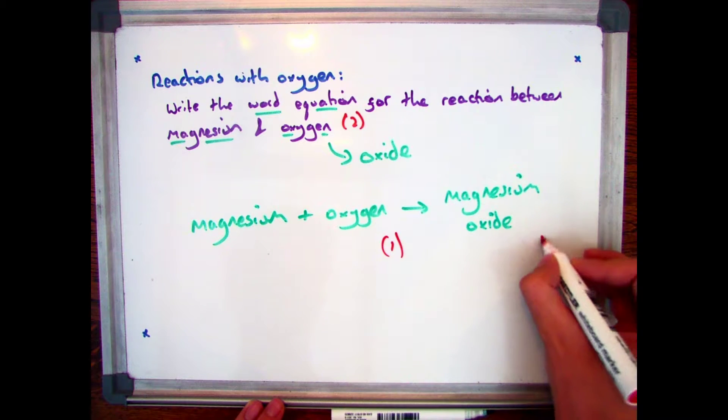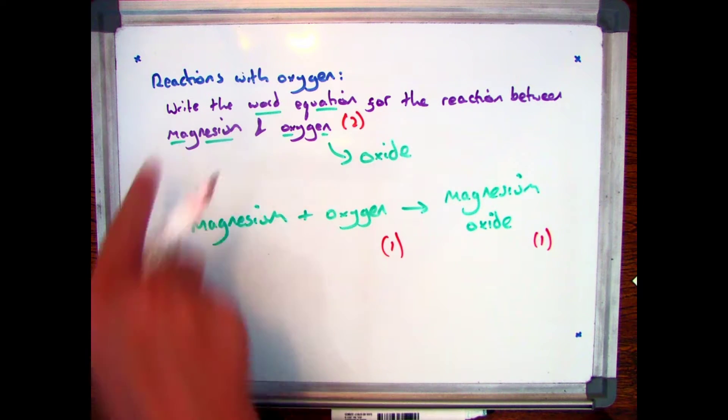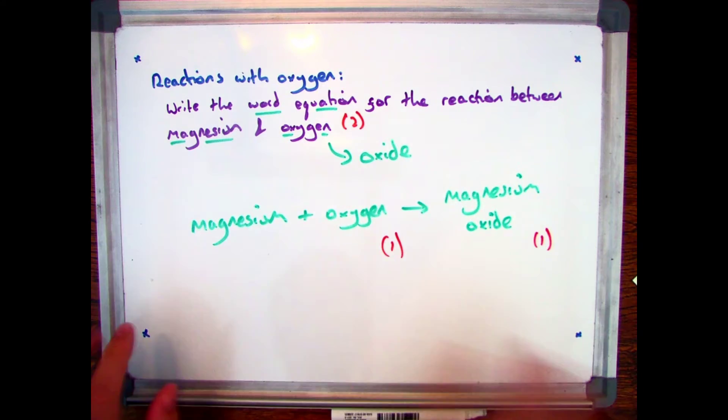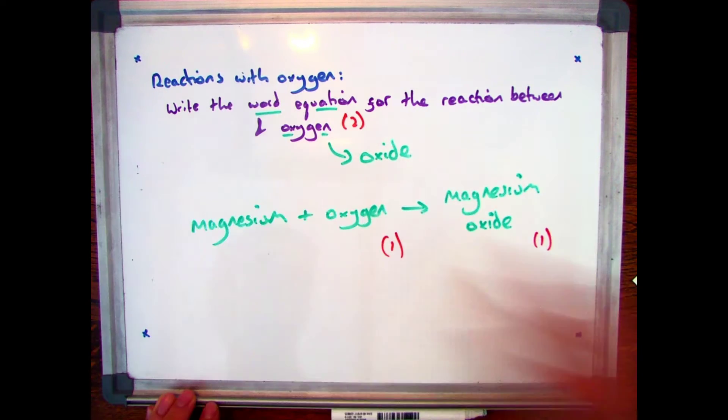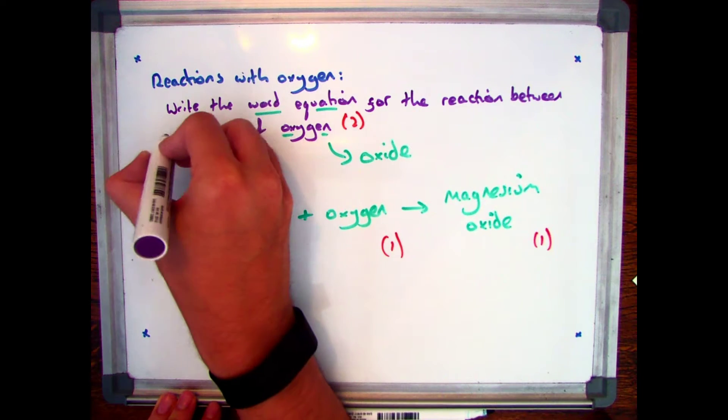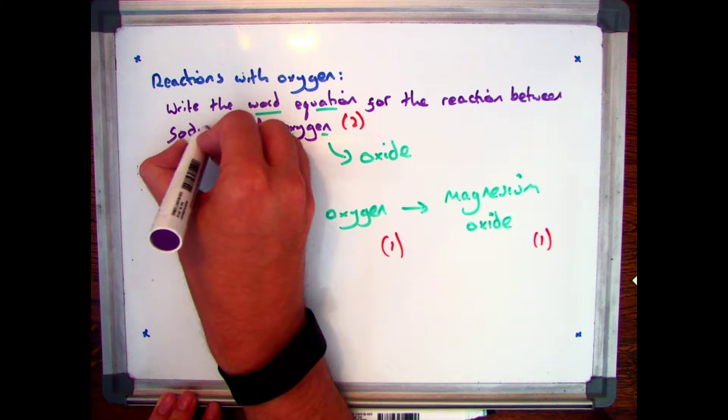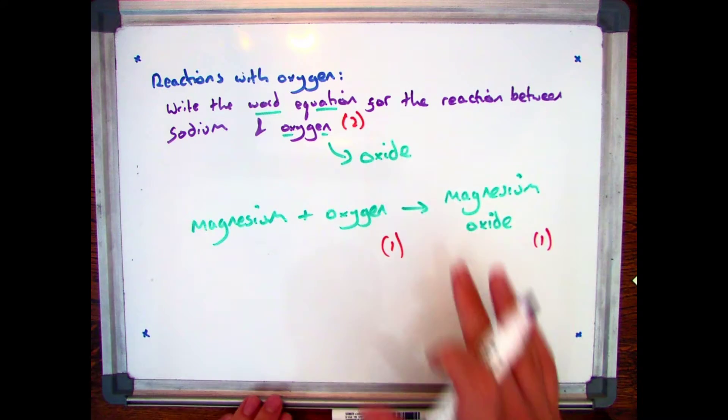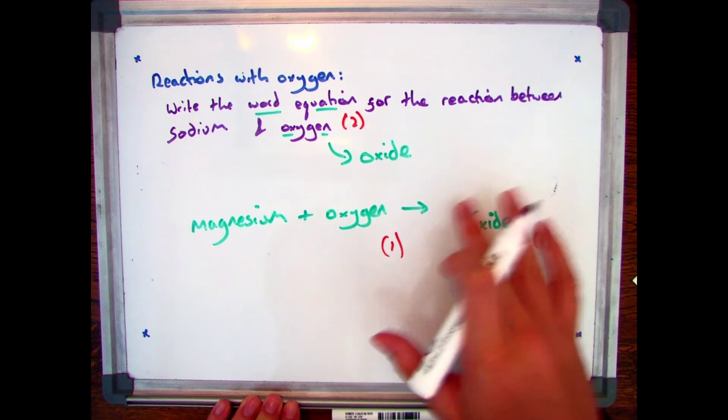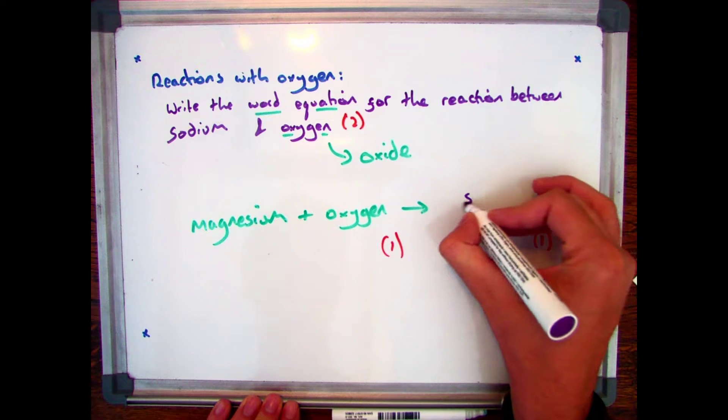Now in this situation you get one mark from magnesium plus oxygen and one mark for your product. And the word equations are exactly the same regardless of the metal. So for example if I change that and had sodium plus oxygen, all I need to do is change my reactants and my product. So instead of magnesium oxide I'm going to have sodium oxide.